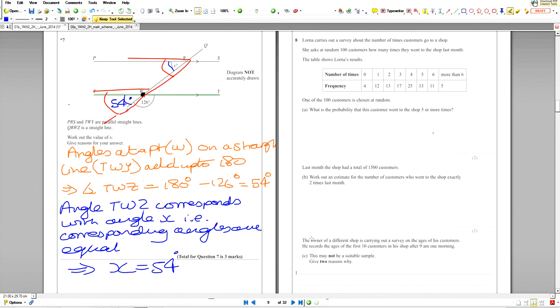More quickly folks. Lona carries out a survey about the number of times customers go to a shop. She asks at random 100 customers how many times they went to the shop last month.